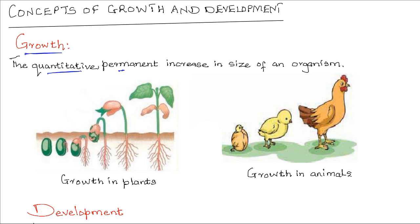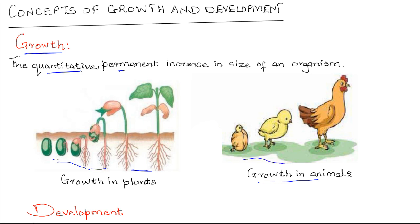For example, this plant is undergoing growth from the seed. There's an increase in height, and an increase in mass and volume of the organism. In the same case, this chicken, as an animal, is undergoing an irreversible change in its mass — that is growth.